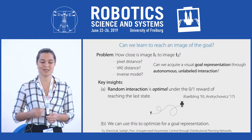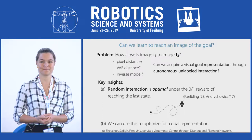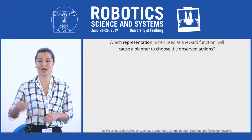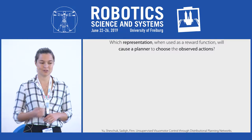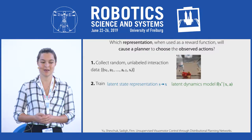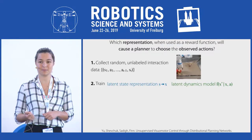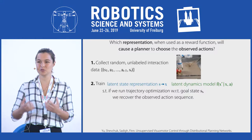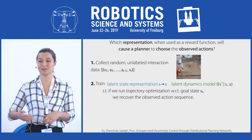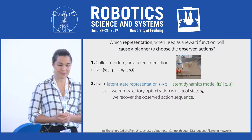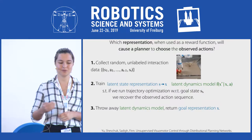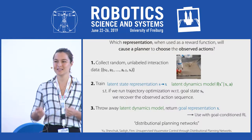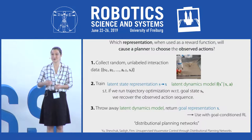We show how to use this insight to optimize for a goal representation. The key question is: which representation, when used as a reward function, will cause a planner to choose the actions observed in the data? First, we collect random unlabeled interaction data. Then we train a latent space representation and a latent dynamics model such that if we run trajectory optimization with respect to the final state, we recover the observed action sequence — essentially embedding a trajectory optimization procedure as a differentiable layer within a neural network. We refer to this approach as Distributional Planning Networks.